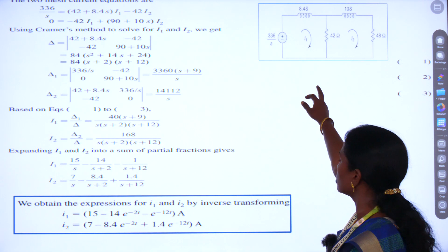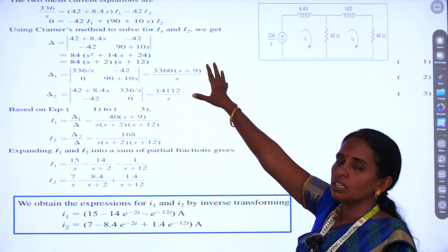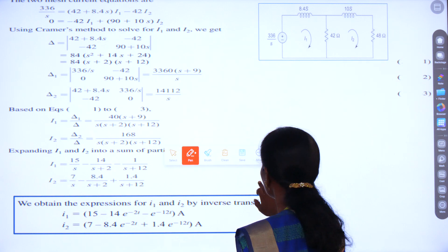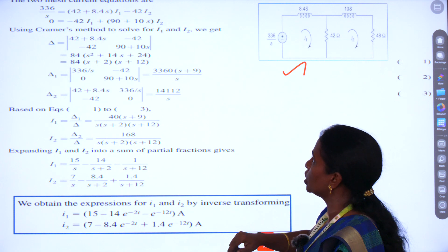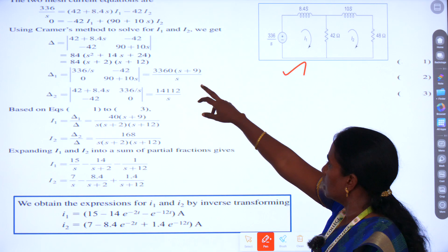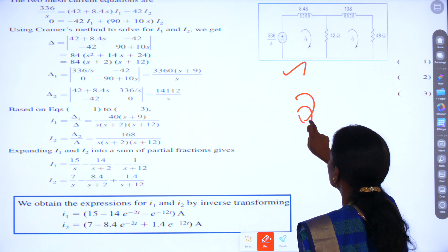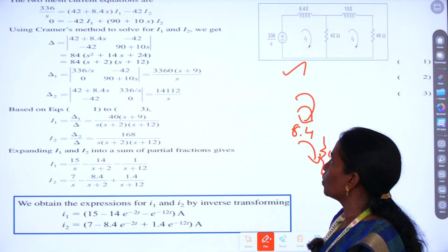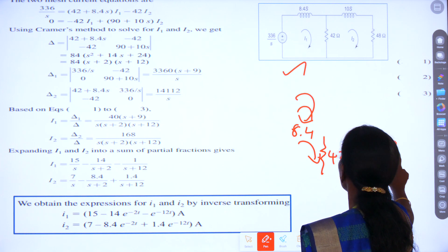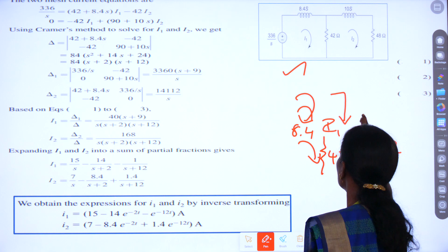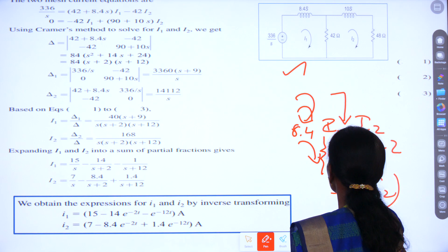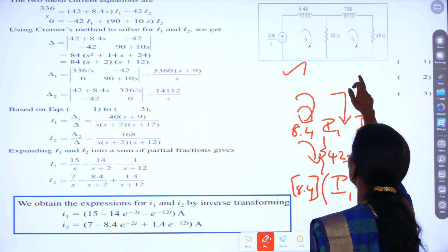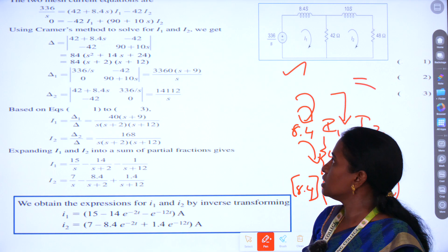Using the mesh current method, we are going to find the equations. The first loop equation is: 336/S = (42 + 8.4S)·I1 − 42·I2. The current divides into branches I1 and I2. For the second loop: 0 = −42·I1 + (90 + 10S)·I2. So we have two equations and we need to find currents I1 and I2.